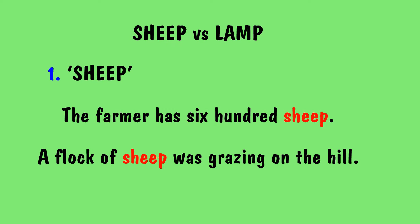Sheep and Lamb. A sheep is a farm animal with a thick woolly coat. The plural of sheep is sheep. The farmer has 600 sheep. A flock of sheep was grazing on the hill.